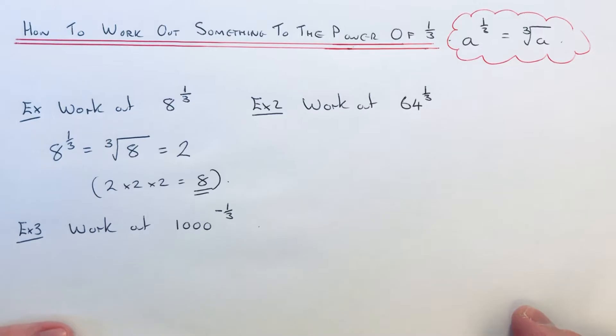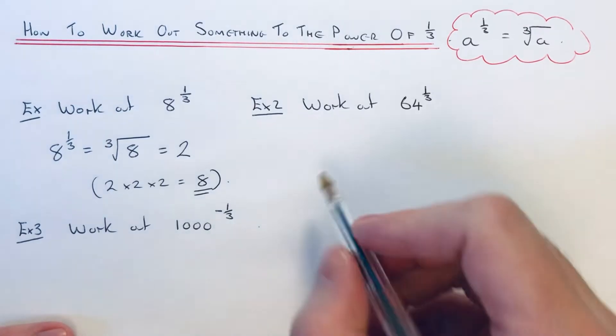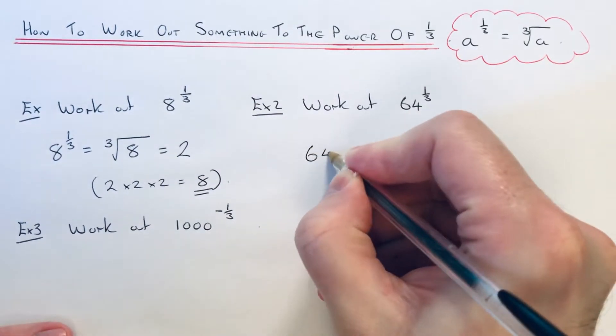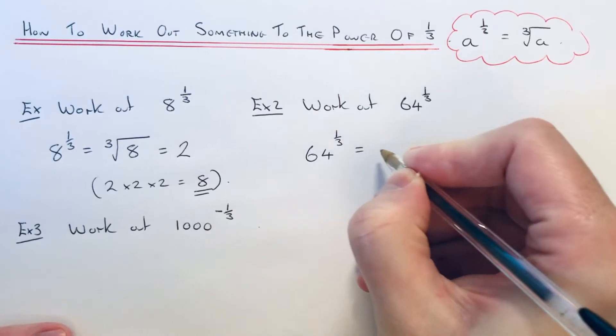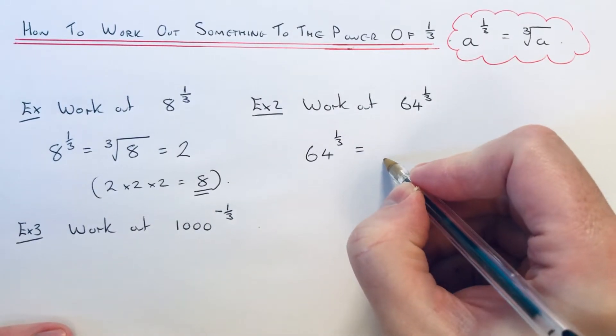So let's have a look at the second example. This time we've got 64 to the power of one third. So again, to do this we just need to take the cube root of 64.